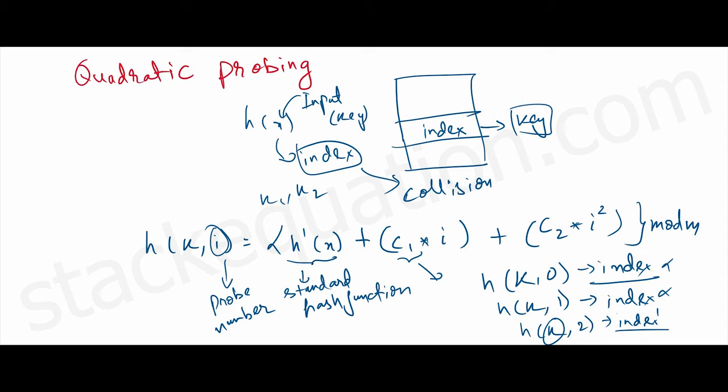All right. So that's how quadratic probing works where we have a standard hash function, and with that, we have two other terms followed by mod M, and M is the number of indices available in the hash table. So from zero, one, two, three, it goes on up to M minus one.